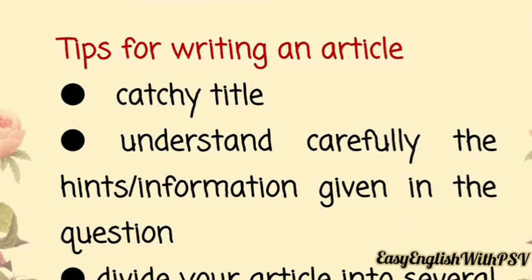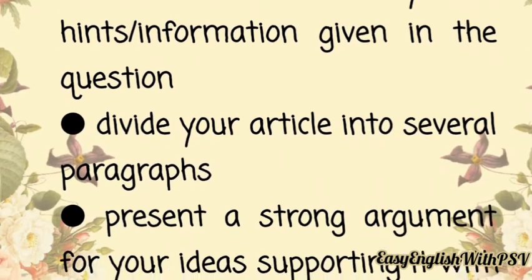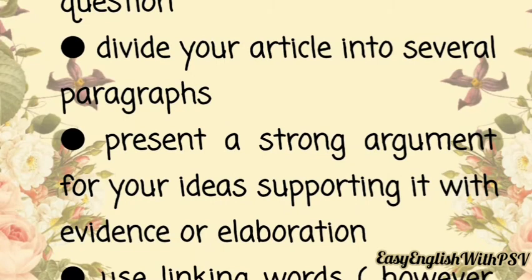Now, tips for writing an article. The very first thing is a catchy title — your title must be eye-catching. Next, understand carefully the hints or information given in the question. After you start writing, organize everything and divide your article into several paragraphs — at least five paragraphs. Present a strong argument for your ideas, supporting them with evidence or elaboration.